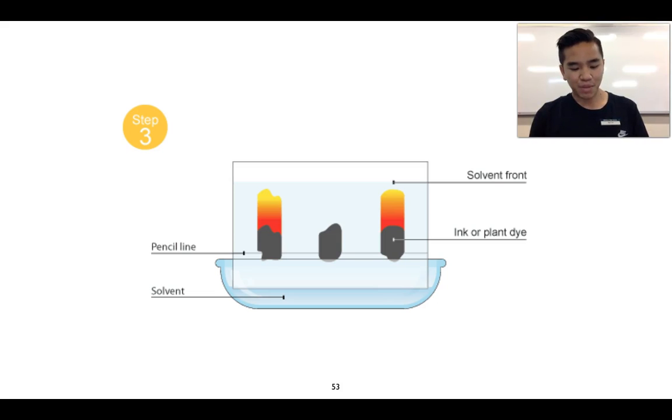If we do that, we can start to see that some of these inks or dyes are actually made up of a combination of different components, whereas some of them may not be. We can then compare different inks or different dyes from one another. This can actually be used in forensic science to confirm the presence of different paints or pigments at crime scenes.